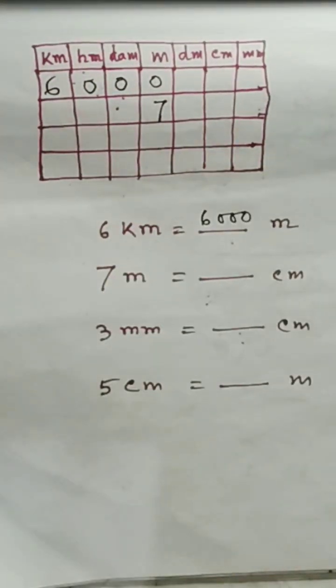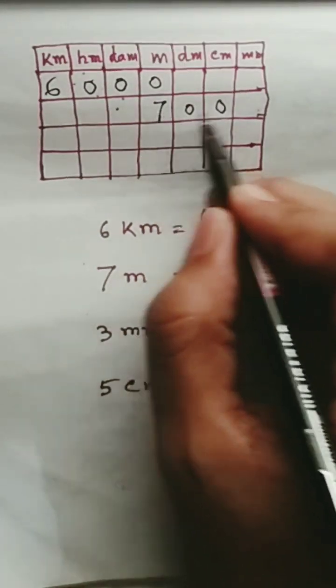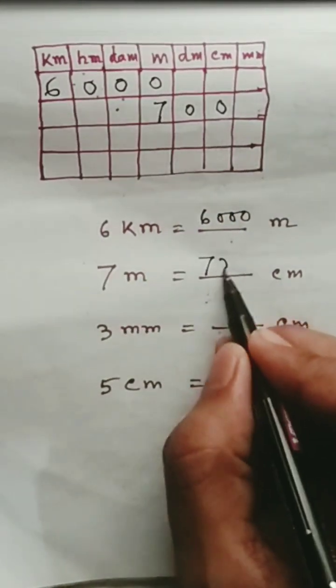Next one. Seven meters. Write seven in the meter box. Okay, seven meters. You have to find centimeters. Now here is centimeter - zero, zero - you will find seven hundred centimeters. Okay.